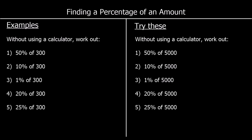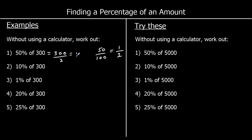The first question asks for 50% of 300. 50% means 50 hundredths — a percentage is the same as a fraction out of 100. So we want 50 hundredths of 300, and 50 hundredths is the same as one half. So whenever we're asked for 50%, that's the same as asking for half. So we want half of 300, which is 300 divided by 2, which is 150.